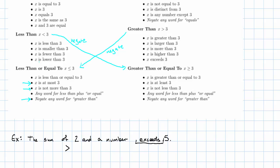The two things we're comparing are the sum of 2 and a number. Sum means add them together. What are we adding? 2 and a number. We're comparing that to 5. The sum of 2 and a number exceeds 5.